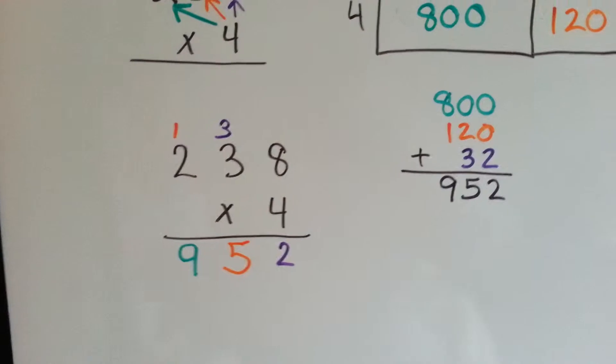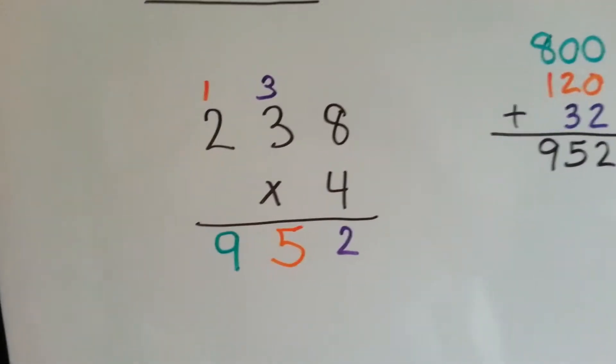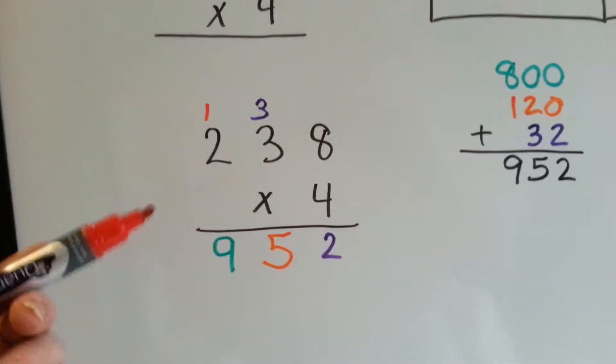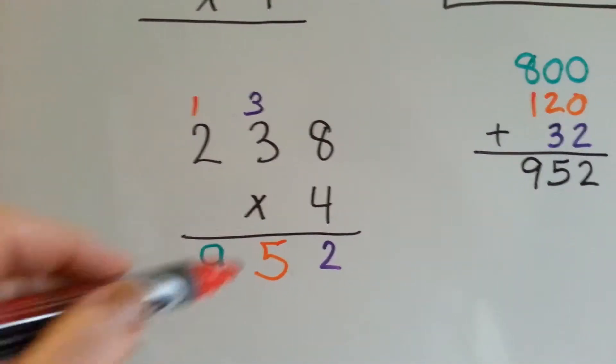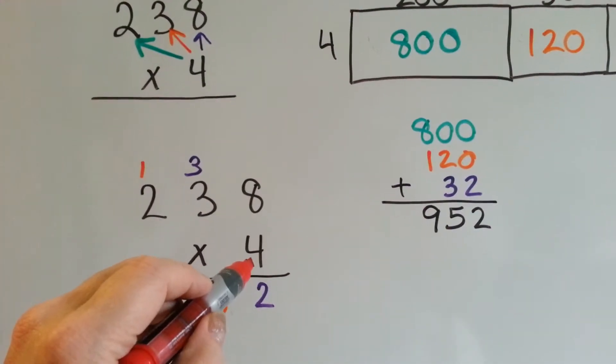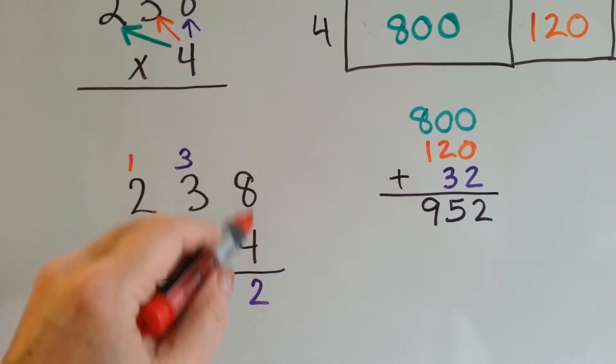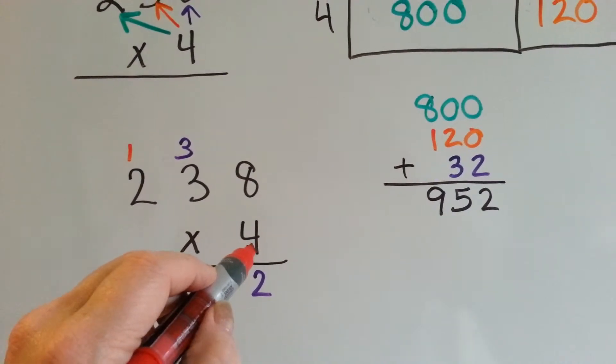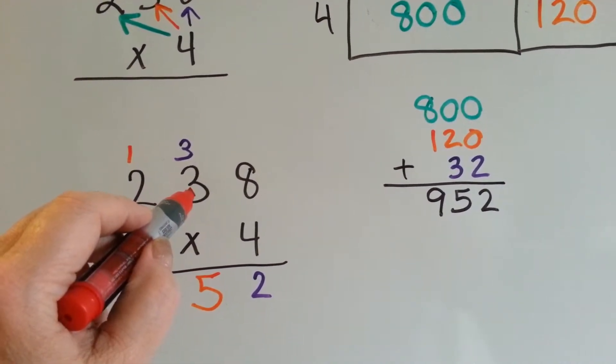Now, the way to do it without having to do the boxes, to do it on regular paper, would be 8 times 4, right here, is 32. You carry the 3 and you put the 2 down. Then you do 4 times 3, which is 12, and you add the 3 up here.